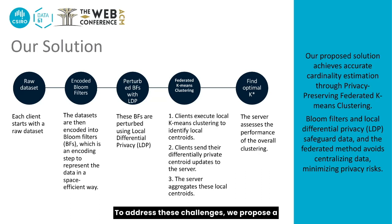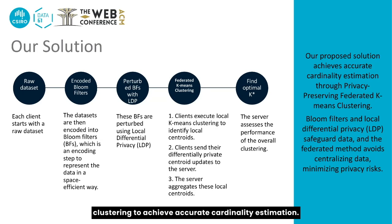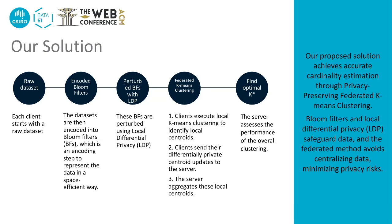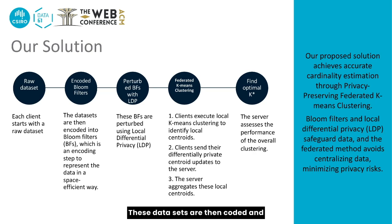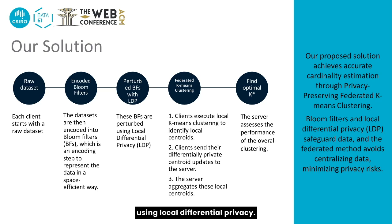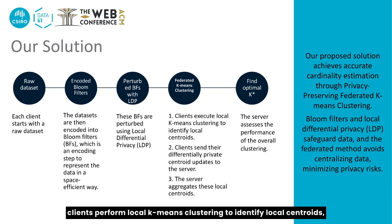To address these challenges, we propose a solution with privacy-preserving federated k-means clustering to achieve accurate cardinality estimation. Our process starts with each client having a raw data set. These data sets are then encoded and loaded into bloom filters, followed by perturbation using local differential privacy. Clients perform local k-means clustering to identify local centroids.